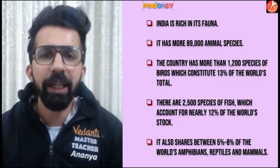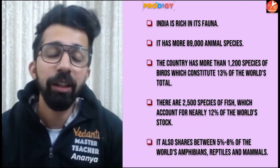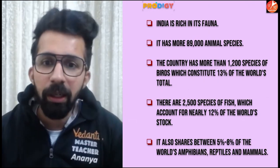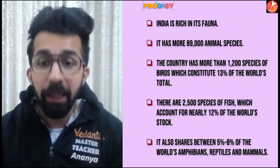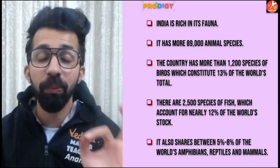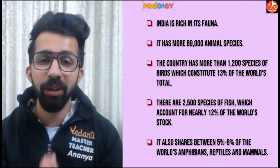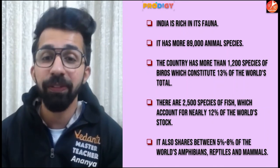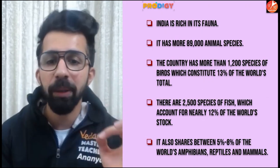You can see a map on the right-hand side of the screen showing various wildlife sanctuaries, bird sanctuaries, and national parks in India — the same map you'll find in your NCERT. India is very rich in its fauna. Fauna is the term used to denote various species of wildlife and wild animals. India has more than 89,000 animal species and more than 1,200 species of birds, which constitute 13% of the world's total.